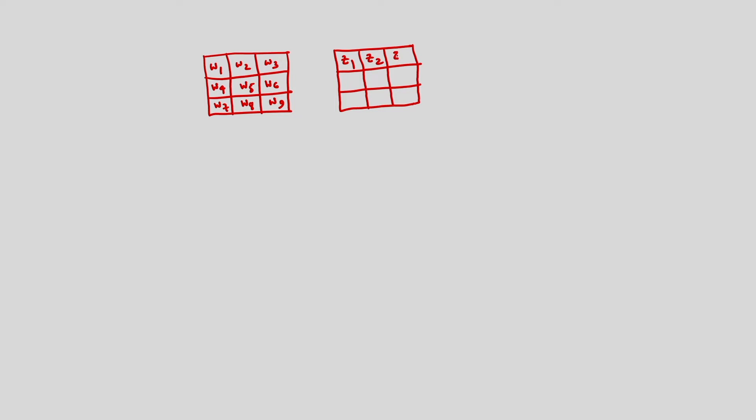Suppose I have a mask with weights w1, w2, w3, and so on. I am considering a 3×3 mask and a 3×3 image region where the pixels are z1, z2, and so forth. The masking operation involves placing the mask over the image and computing the response: w1·z1 + w2·z2 + ... + w9·z9.